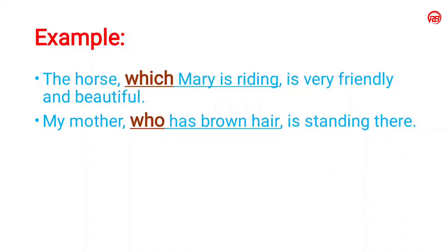In the given sentences, 'the horse is very friendly and beautiful' is an independent clause. 'Which Mary is riding' is the dependent clause — that is, the relative clause. 'My mother is standing there' is the main clause, and 'who has brown hair' is the dependent clause — the relative clause.